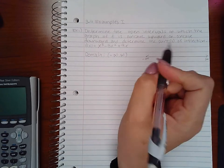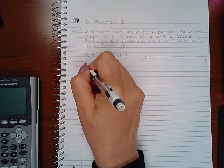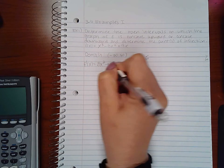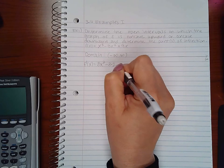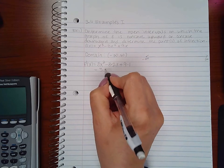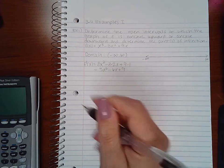Now I need to find my critical numbers for the second derivative, so I'm first going to find the first derivative which is 3x squared minus 3 times 2x plus 9 times 1, or 3x squared minus 6x plus 9.